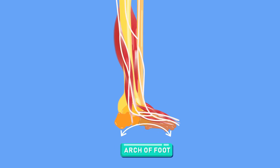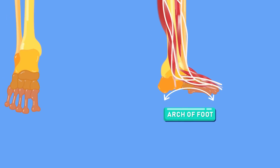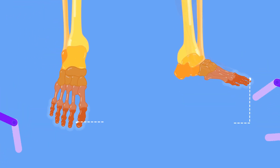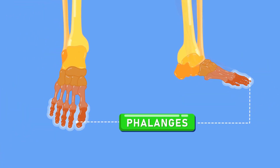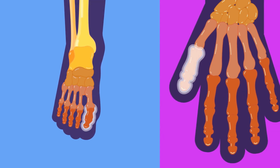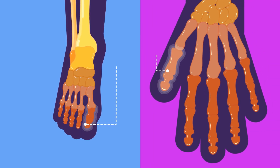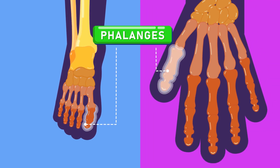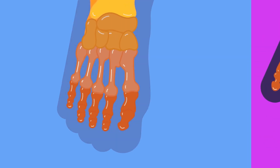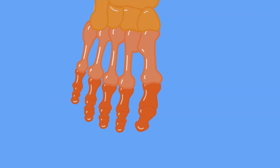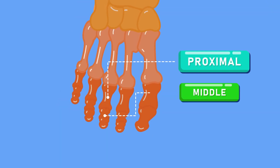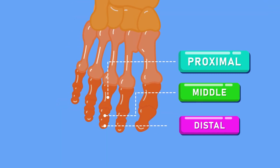Ligaments and tendons wrapping the tarsals and metatarsals together form the arches of our feet. Our toes are also called phalanges, just like our fingers. Just like our thumbs, our big toes have only two phalanges. However, the rest of our toes have three: proximal, middle, and distal.